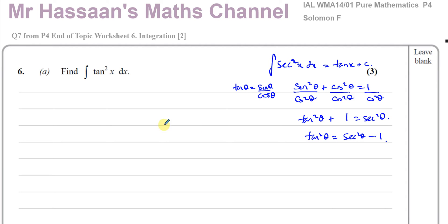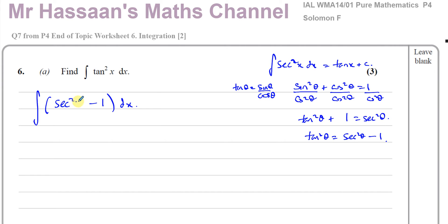So I can replace tan²x with sec²x minus 1. I'm going to integrate sec²x minus 1 with respect to x. It's an indefinite integral, so I have to put plus C at the end. We know the integral of sec²x is tan x. So we have tan x minus, and the integral of 1 with respect to x is x, giving tan x minus x plus C. That's the answer — that's question six part A.